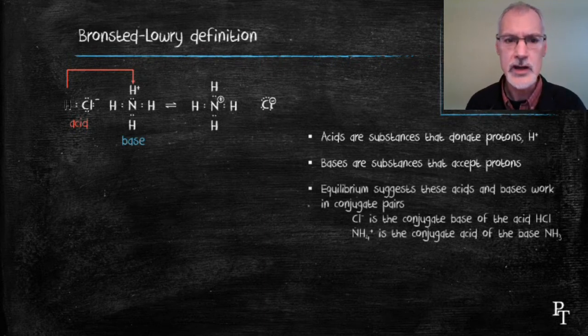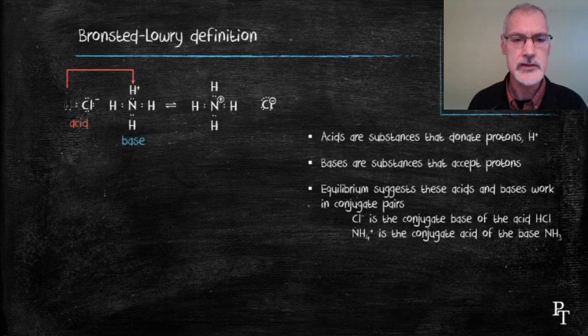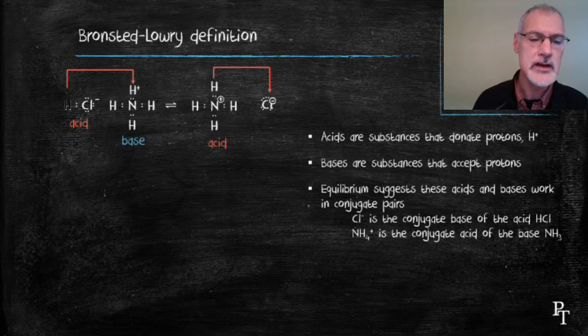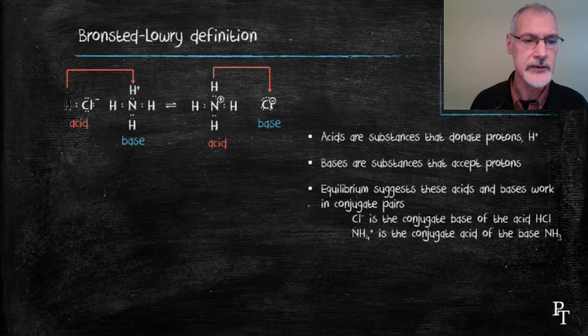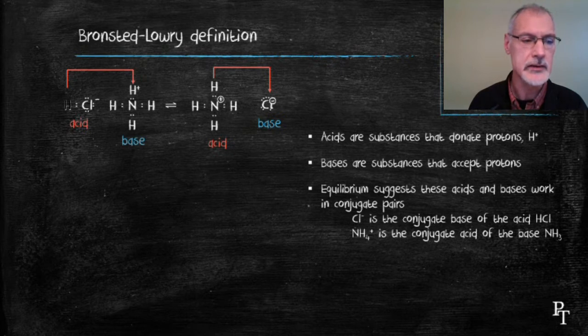They also involved a concept of equilibrium that reactions could go in reverse. And if we view this reaction as going in reverse, we can see that the ammonium ion is going to donate a proton and form a chloride ion. And this then would be called the acid and the chloride ion then the base. This led to the development of what were called conjugate acid-base pairs.